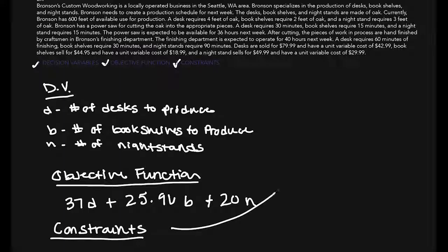So, I'm actually going to bring this up here just so we can draw on the same spot. So, we know a desk is 4 plus 2 feet for the bookshelf plus how many for the nightstand? 3. That all has to be less than or equal to 600 feet.